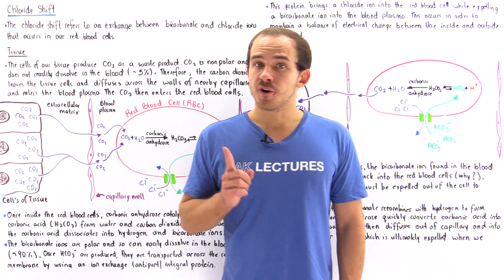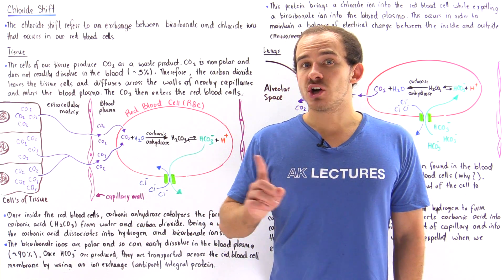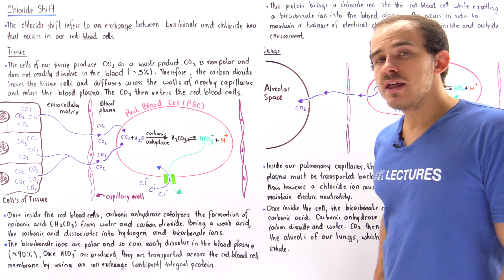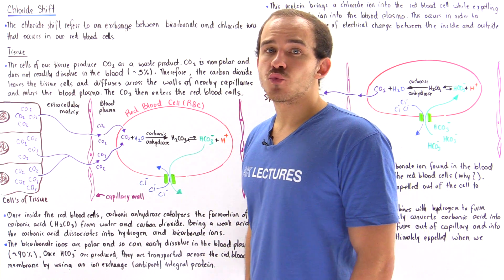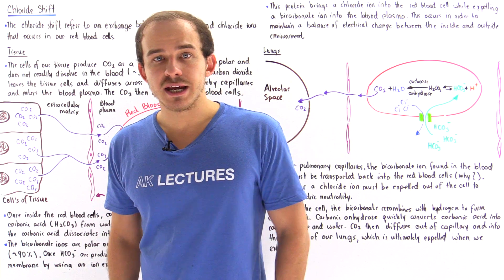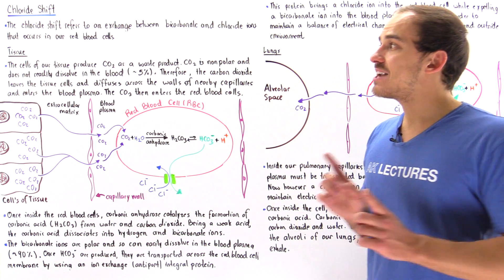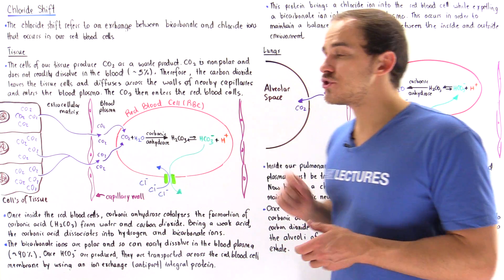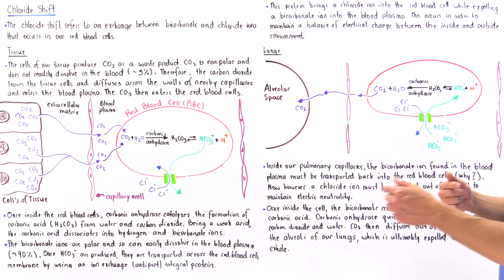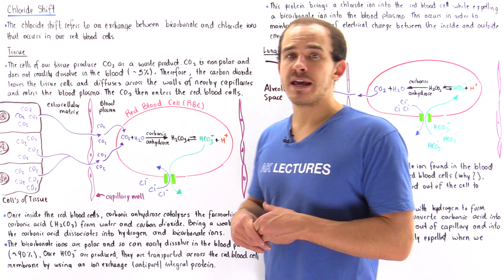The chloride shift refers to the exchange of the bicarbonate ion for the chloride ion that takes place inside the red blood cells of our body. The chloride shift takes place not only in the tissues but also in the lungs, but the process is reversed, as we'll see in just a moment.